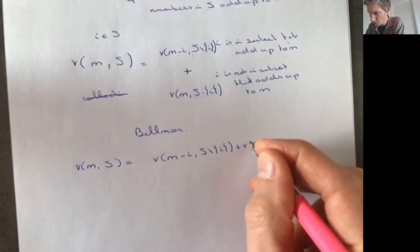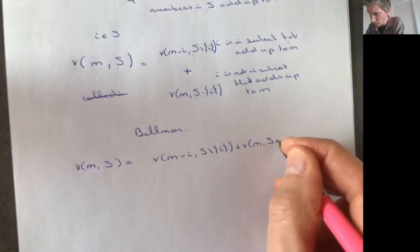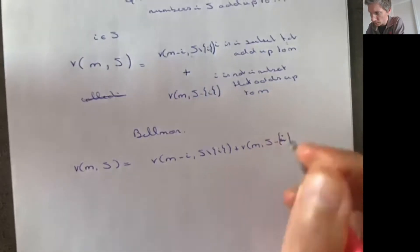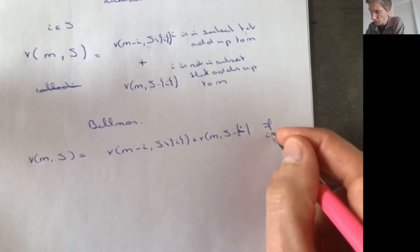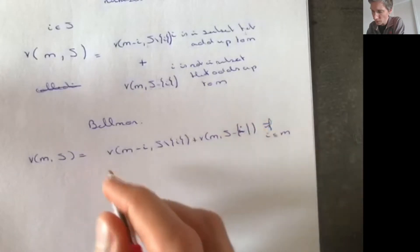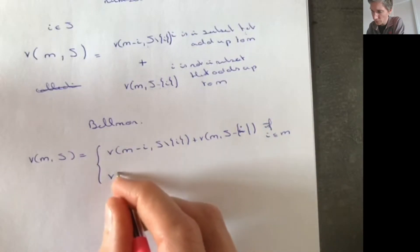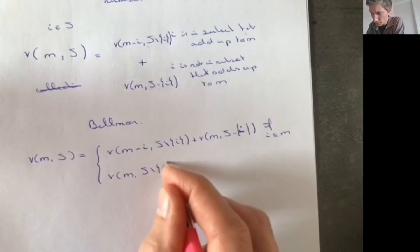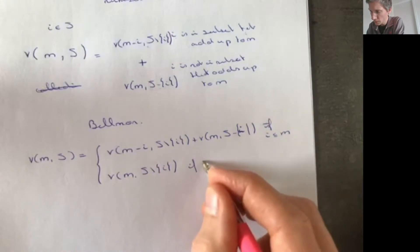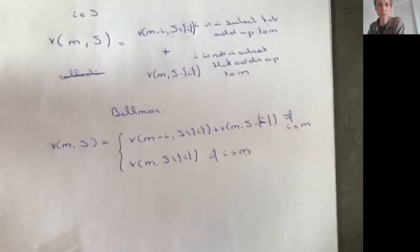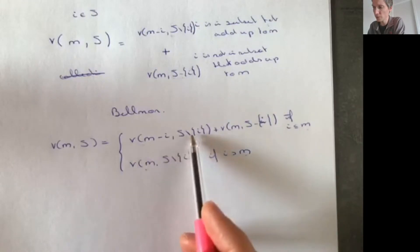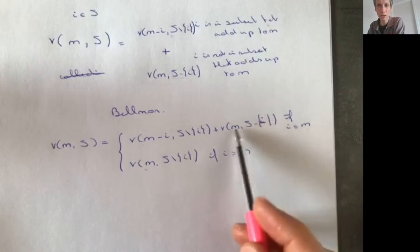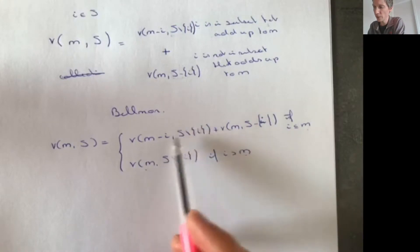The next problem we're going to look at is called the subset sum problem. The ingredients are the following: we have a set S containing numbers, for example {2, 4, 6, 8, 10}, and then we have another number m, for example 16. The question is: how many combinations of numbers can we take from the set such that if we add all these numbers together we get 16?